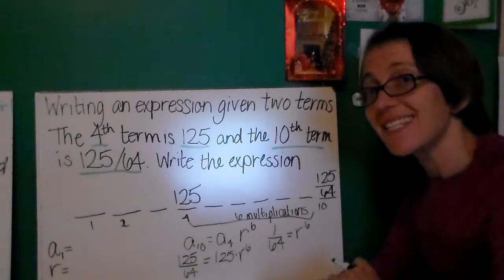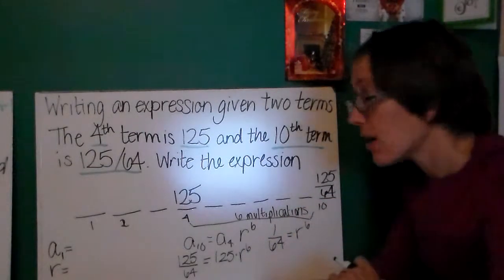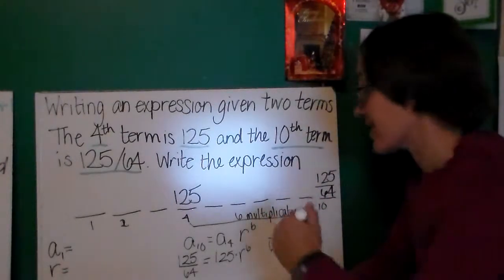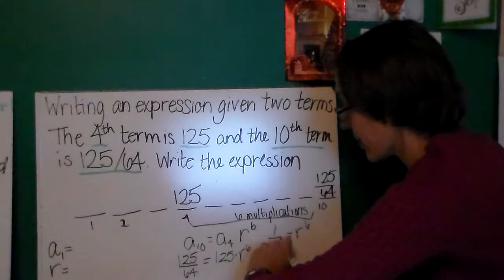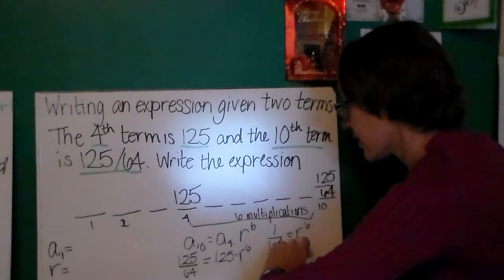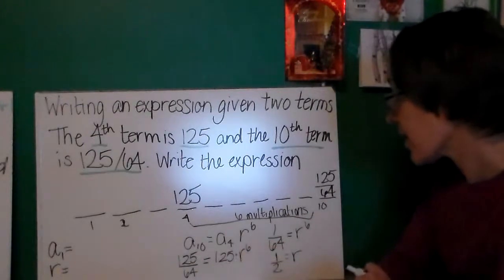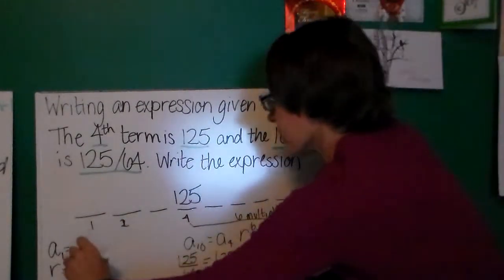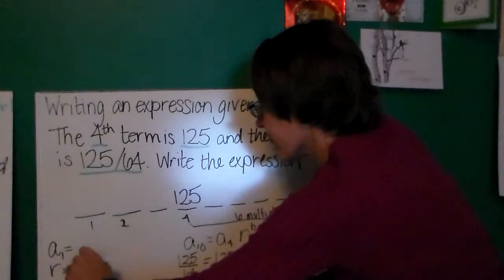I'm going to take the sixth root of 1 over 64. I'm going to make the assumption that it's positive. I could be wrong, but I'm going to make the assumption since I haven't heard anything else in this problem. The sixth root of 64 is 2. The sixth root of 1 is 1. So, I'm going to say r is 1 half.